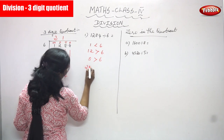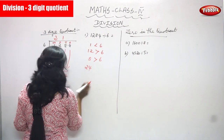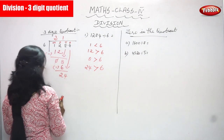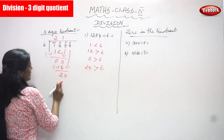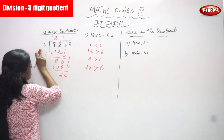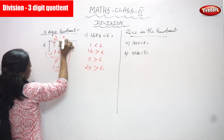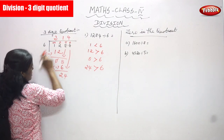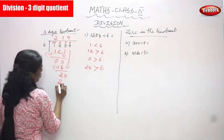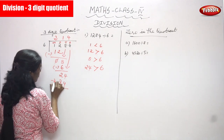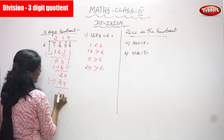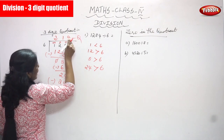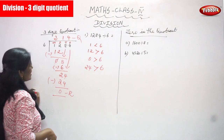24 is greater than 6. 6 fours are 24, so write 4 in the quotient place. Write 24 below and subtract: 24 minus 24 equals zero. The remainder is zero, and the quotient is 214.